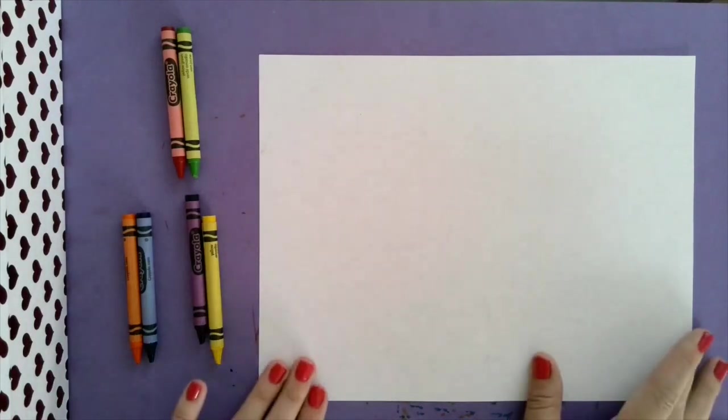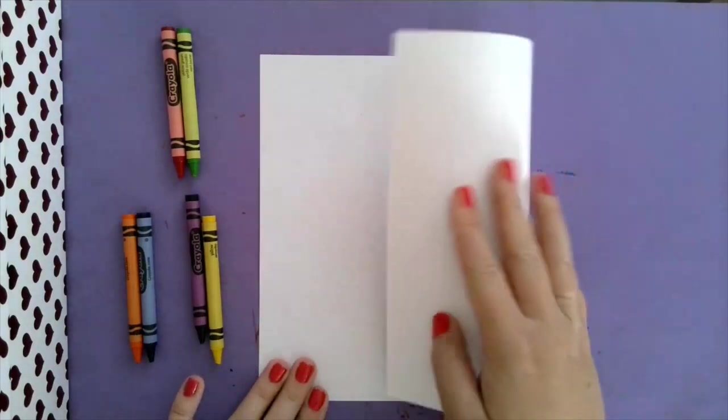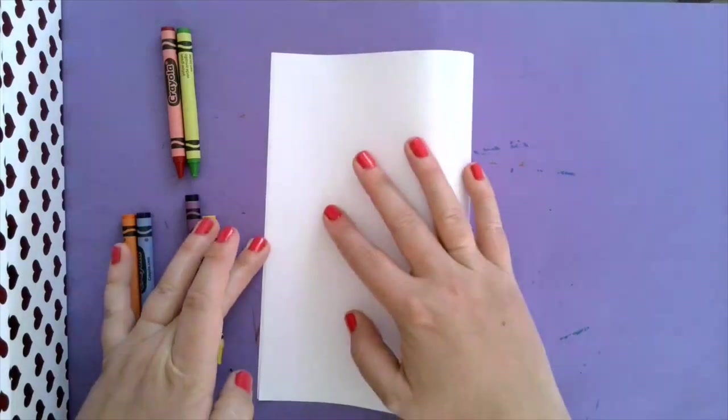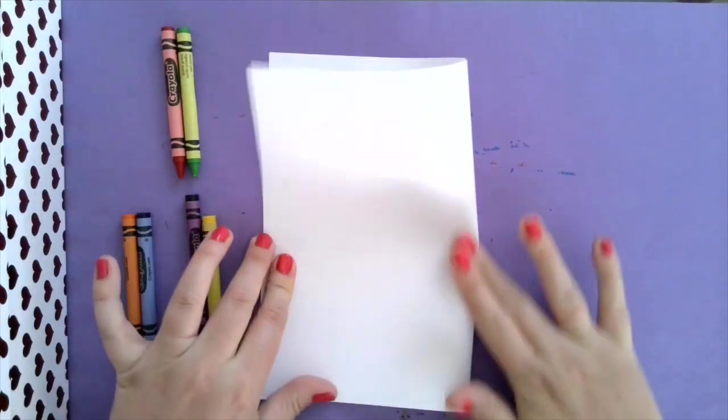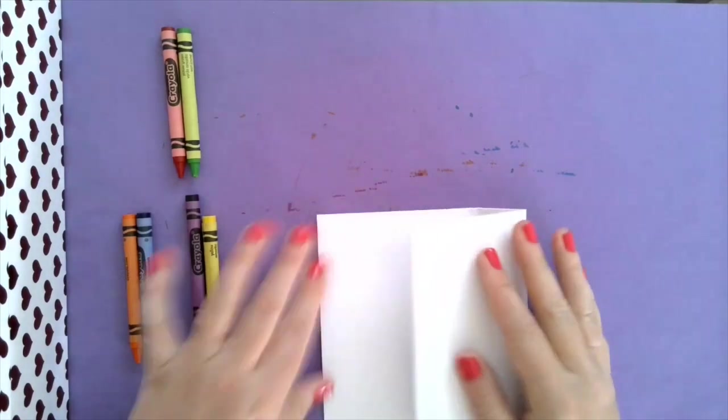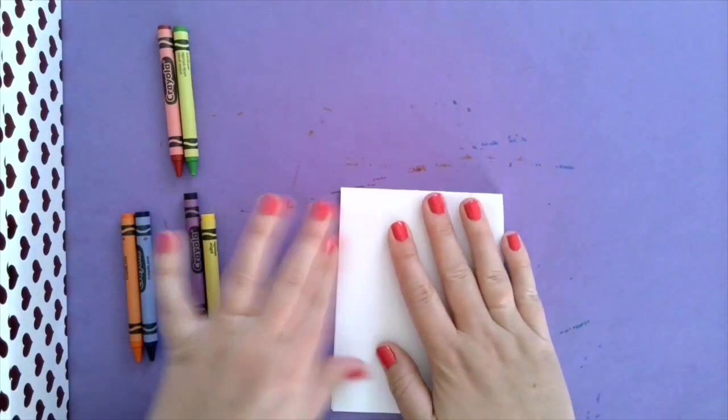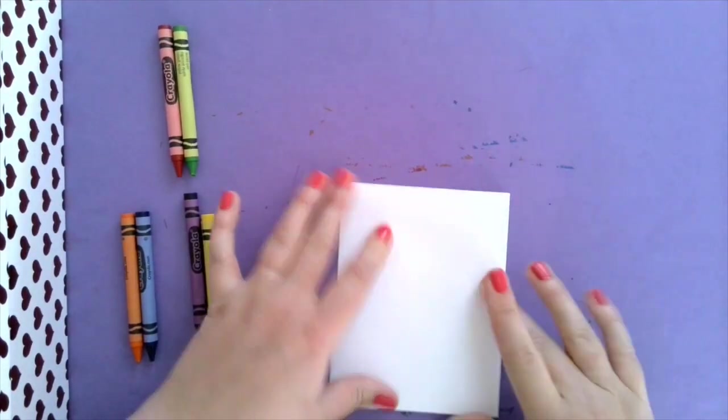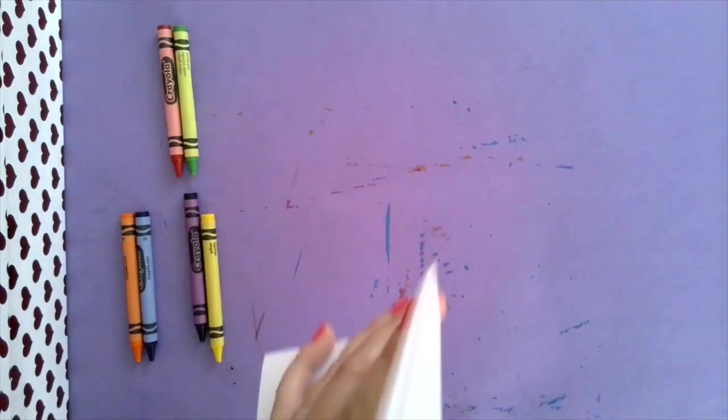The first thing we need to do is get a piece of paper. On our piece of paper we are going to fold it in half and then fold it in half one more time to make four squares. When we're done with that let's open it up.